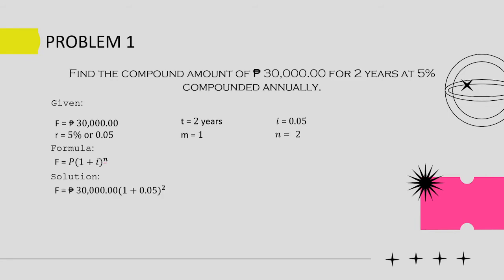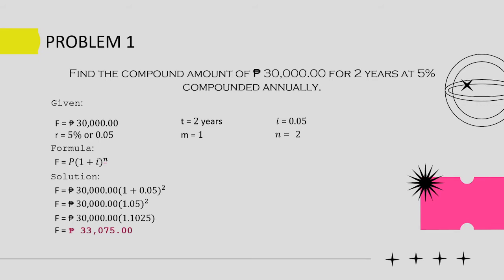Now we can use this formula to find the maturity value. Substituting the given numbers: F equals P30,000 times (1 plus 0.05) to the power of 2. (1 plus 0.05) to the power of 2 equals 1.1025. P30,000 times 1.1025 equals P33,075. Our maturity value for the compound amount earned on P30,000 for 2 years at 5% compounded annually is P33,075.